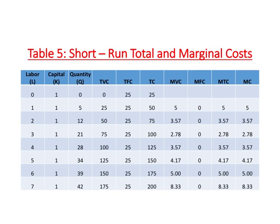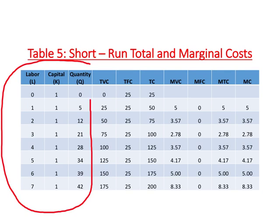We have a table where the first three columns represent the short-run production function. We have assumed that labor is paid $25 per worker and the rent on the building is $25 as well. Based on those numbers and the short-run production function, we calculated TVC, TFC, and TC.